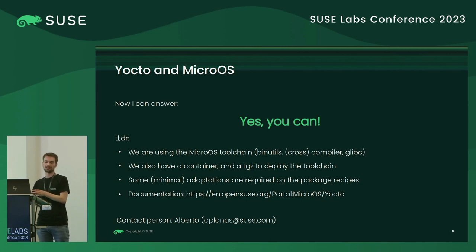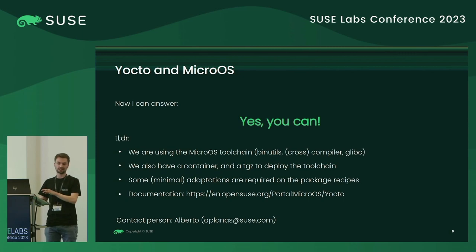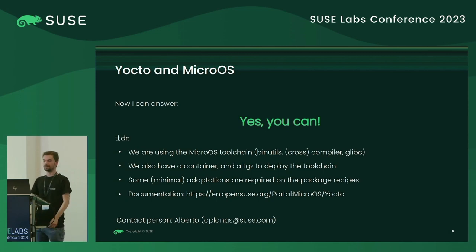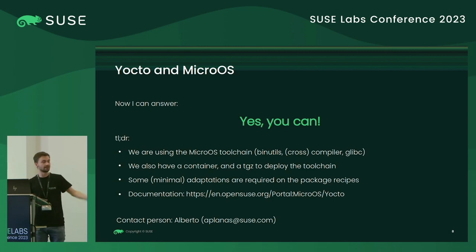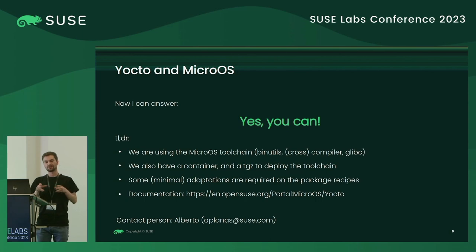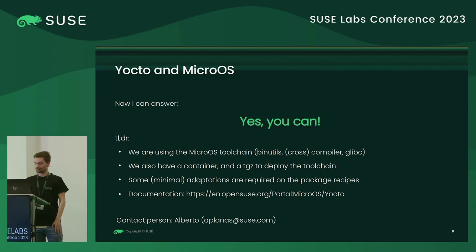It's also used by software vendors such as Qt, where you have a Yocto layer you can check out and combine with your own Yocto setup to get software that boots to Qt. Now we have a way to combine both approaches: you can actually build Yocto packages you can install on MicroS. There is information on the wiki on how to do that. Currently you can only build MicroS packages using Yocto — you cannot build MicroS itself using Yocto. Contact person is also Alberto.